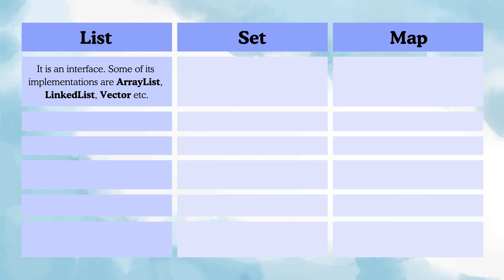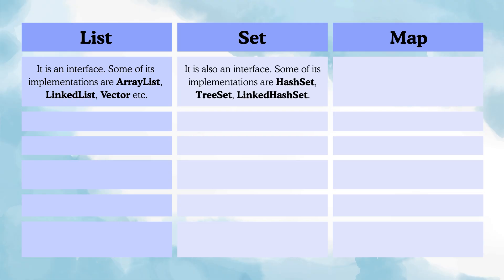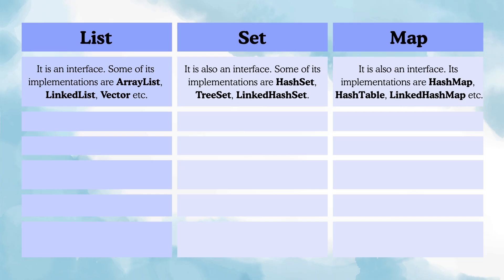List is an interface. Some of its implementations are ArrayList, LinkedList, and Vector. Set is also an interface. Some of its implementations are HashSet, TreeSet, and LinkedHashSet. Map is also an interface. Its implementations are HashMap, HashTable, LinkedHashMap, etc.